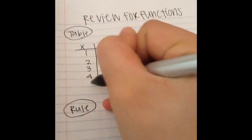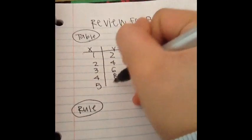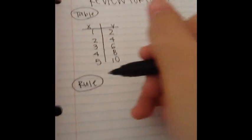F is for friends who do stuff together, U is for you and me, N is for anywhere and anytime at all down here in the deep blue sea.